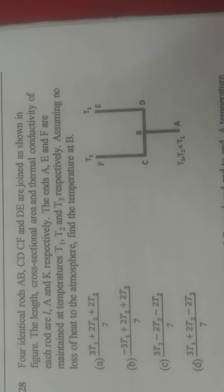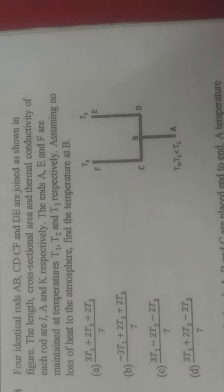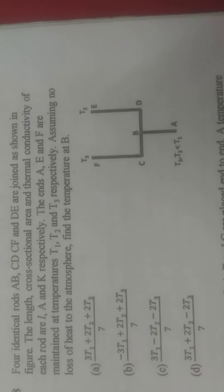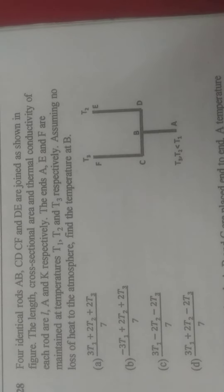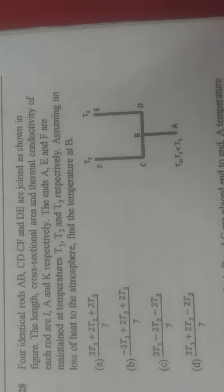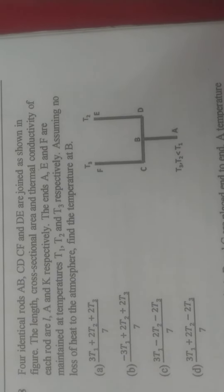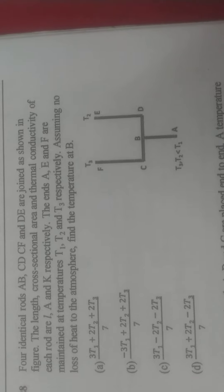For identical rods A, B, C, D, E, F, and D are joined as shown in the figure. The length, cross-section area, and thermal conductivity of each rod are L, A, and K respectively. Points A, E, and F are maintained at temperatures T1, T2, and T3 respectively. Assuming no loss of heat to the atmosphere, find the temperature at B.